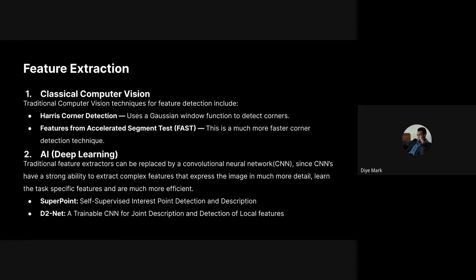CNNs are deep learning networks with many deep layers. Within those layers there are filters capable of extracting features from images with greater accuracy. In the AI-based deep learning feature extraction space, models like SuperPoint and D2-Net are used to detect interest points in images.